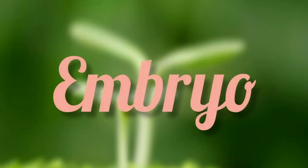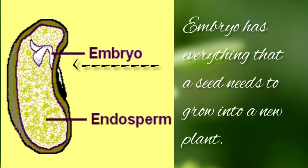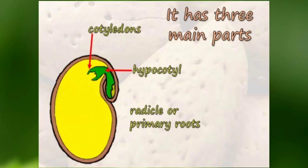Third, embryo. The next and most important part of a seed is the embryo. The embryo has everything that a seed needs to grow into a new plant. It has three main parts: cotyledons, hypocotyl, and radicle or primary root.